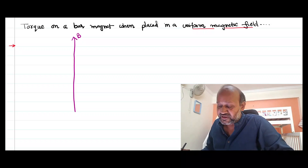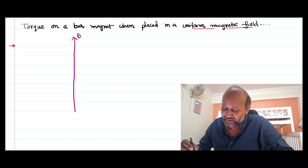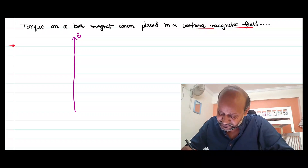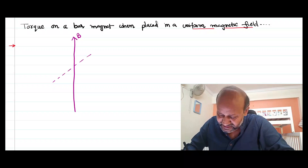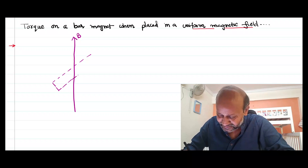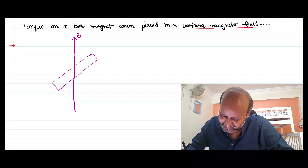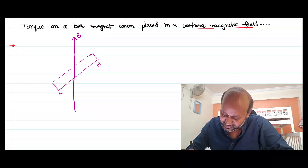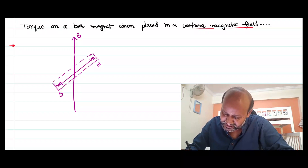Now you are going to keep a bar magnet. When you keep a bar magnet, it will tilt — that's why I am already drawing a tilted magnet. In the beginning it need not be like this, but there is a magnet. This magnet has a north pole and a south pole, each of pole strength m. The distance between the poles is the length of the magnet, that is 2L.